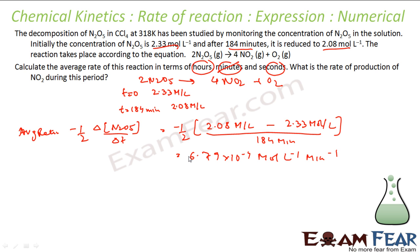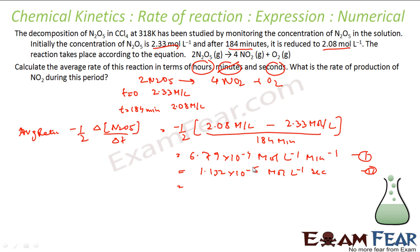If you want to find the rate in seconds, divide the whole thing by 60, because minutes are in the denominator and 1 minute = 60 seconds. So you get 1.132 × 10⁻⁵ moles per litre per second. If you want it in hours, take equation 1 and multiply by 60, because 184 minutes equals 184/60 hours. You get approximately 4.07 × 10⁻² moles per litre per hour.